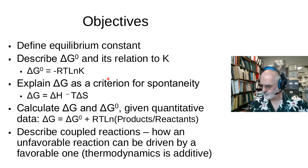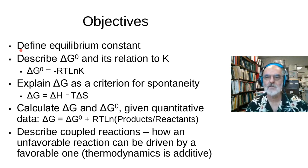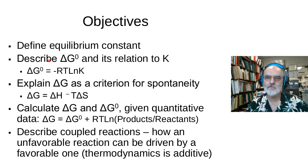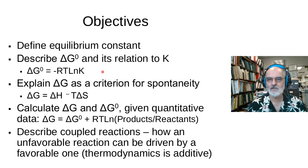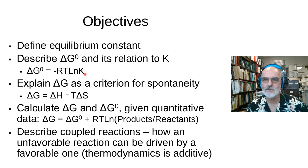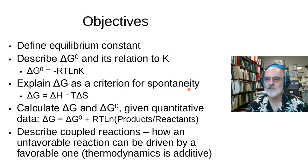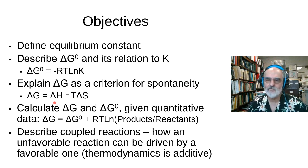The objectives for this lecture are to define what we mean by an equilibrium constant and then describe standard state free energy, delta G-naught, and its relationship to an equilibrium constant. We'll show and derive the expression delta G-naught equals minus RT ln K, where R is the gas constant and T is degrees Kelvin. We'll explain delta G as a criteria for spontaneity — will a reaction move forward as written?